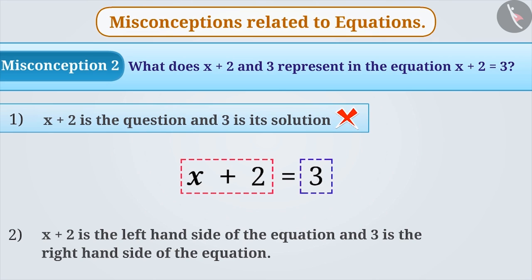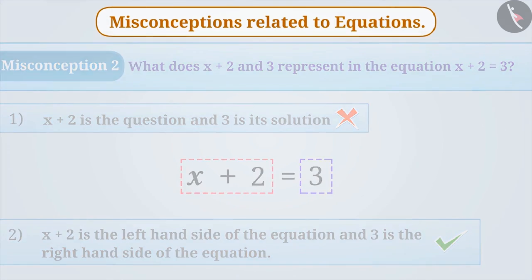Whereas, the correct understanding is that x plus 2 is the left-hand side of the equation and 3 is the right-hand side.